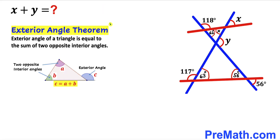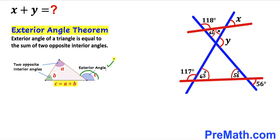Now let's recall the exterior angle theorem. According to this theorem, the exterior angle of a triangle is equal to the sum of the two opposite interior angles, as shown in this diagram. Here, angle c is the exterior angle, whereas angles a and b are the opposite interior angles, such that c equals a plus b.